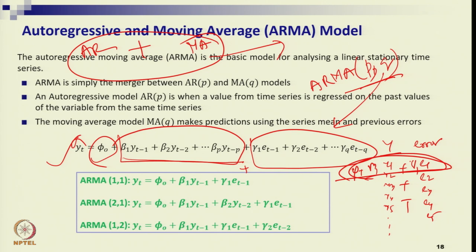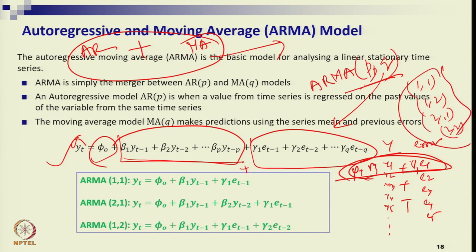Let us understand the steps of the ARMA process. Generally, people use orders like (1,1), (1,2), (2,1), or a maximum of (2,2). Let us restrict our discussion to ARMA(1,1). With p=1 and q=1, you have one lag of actual past data and one error term — the AR and MA components come together.